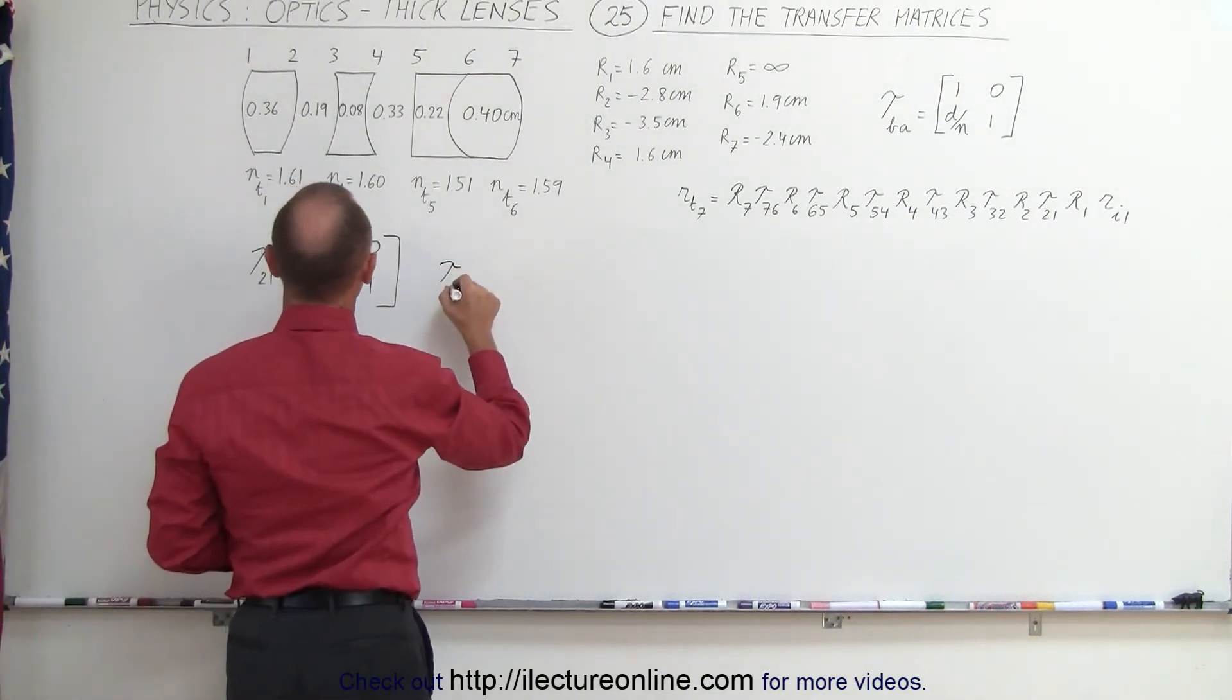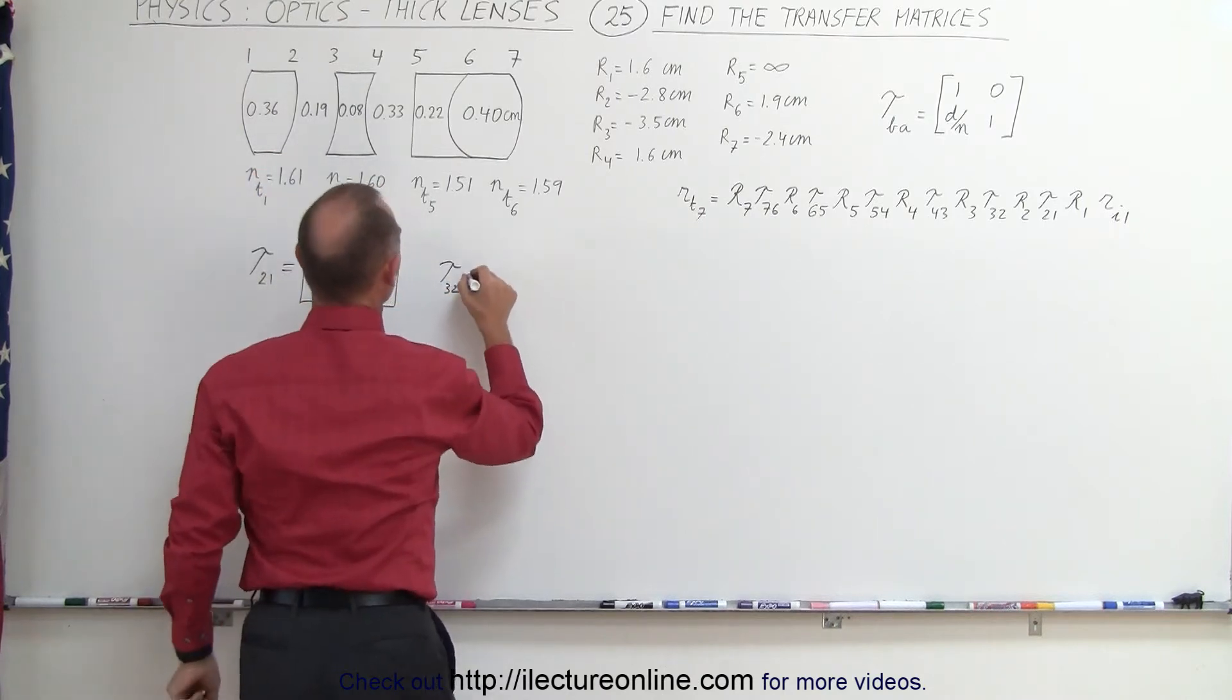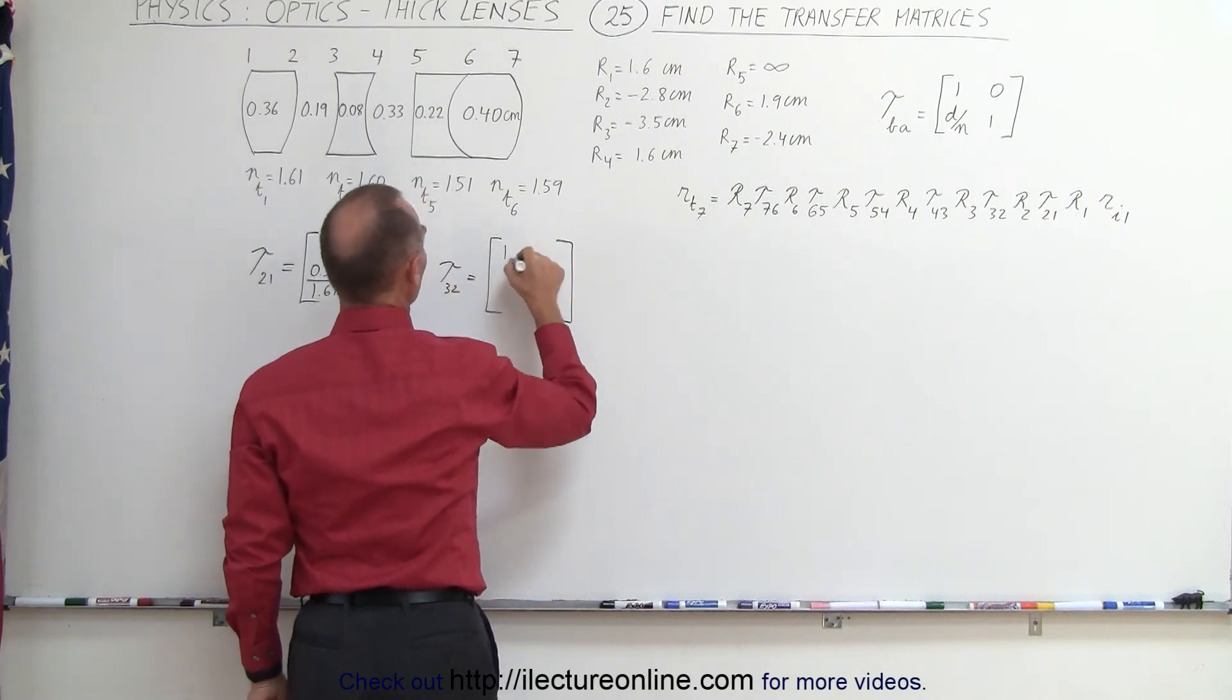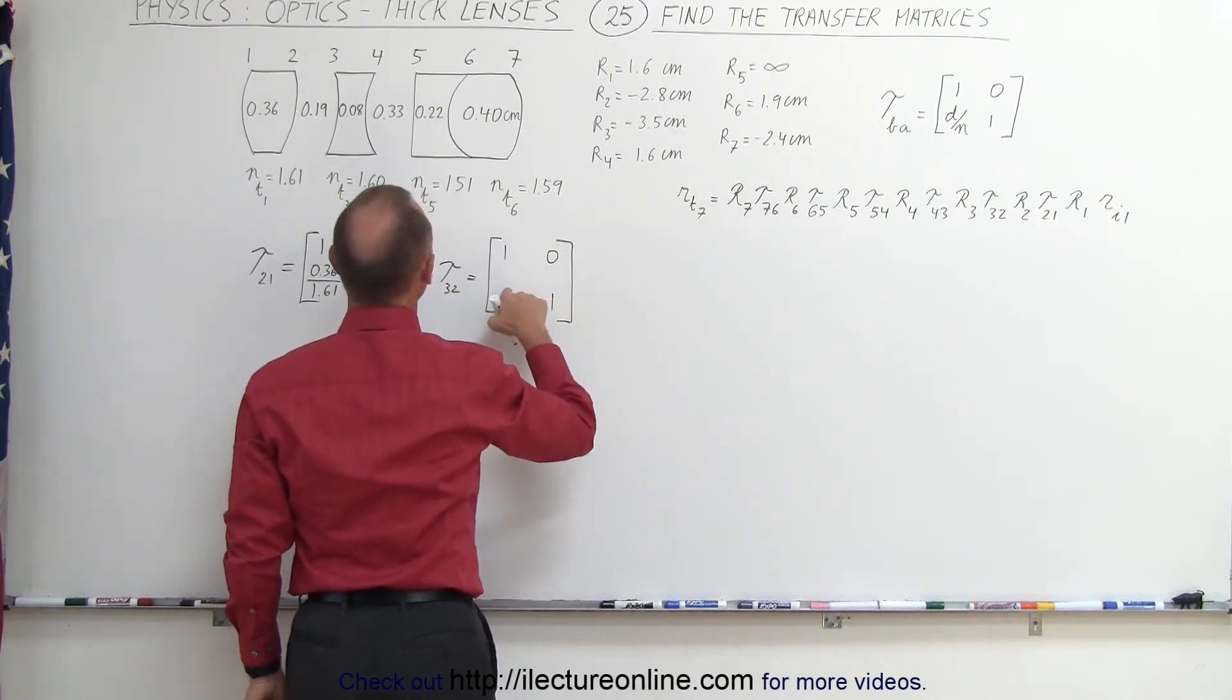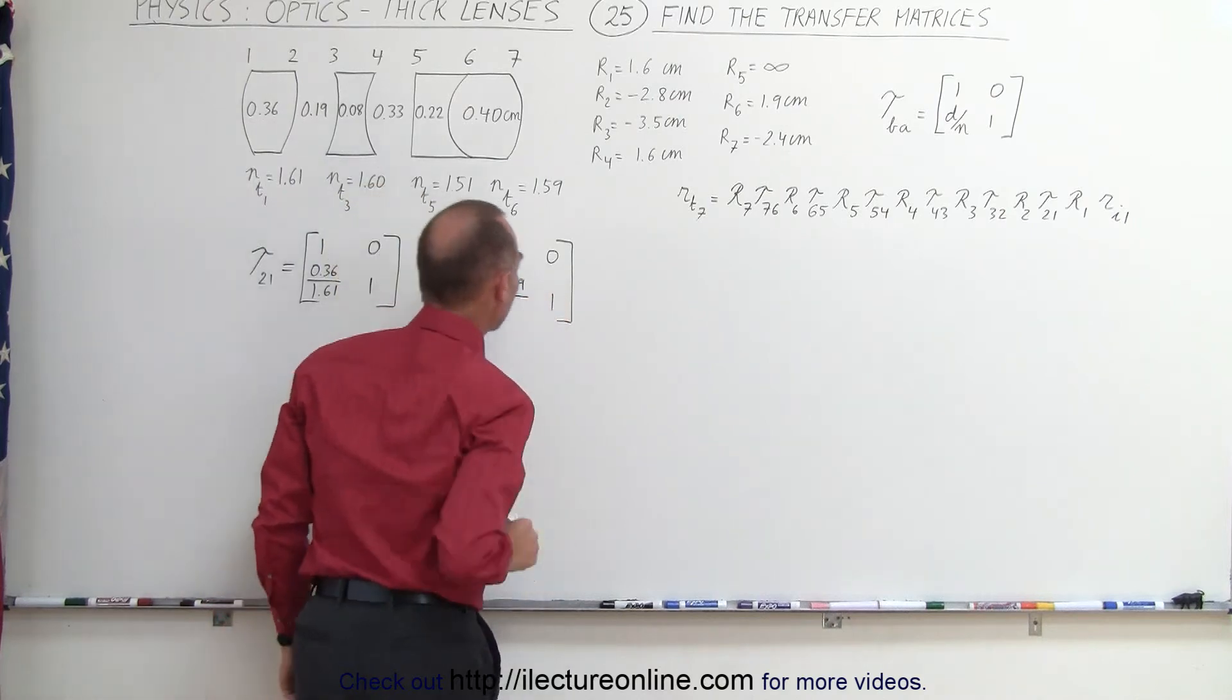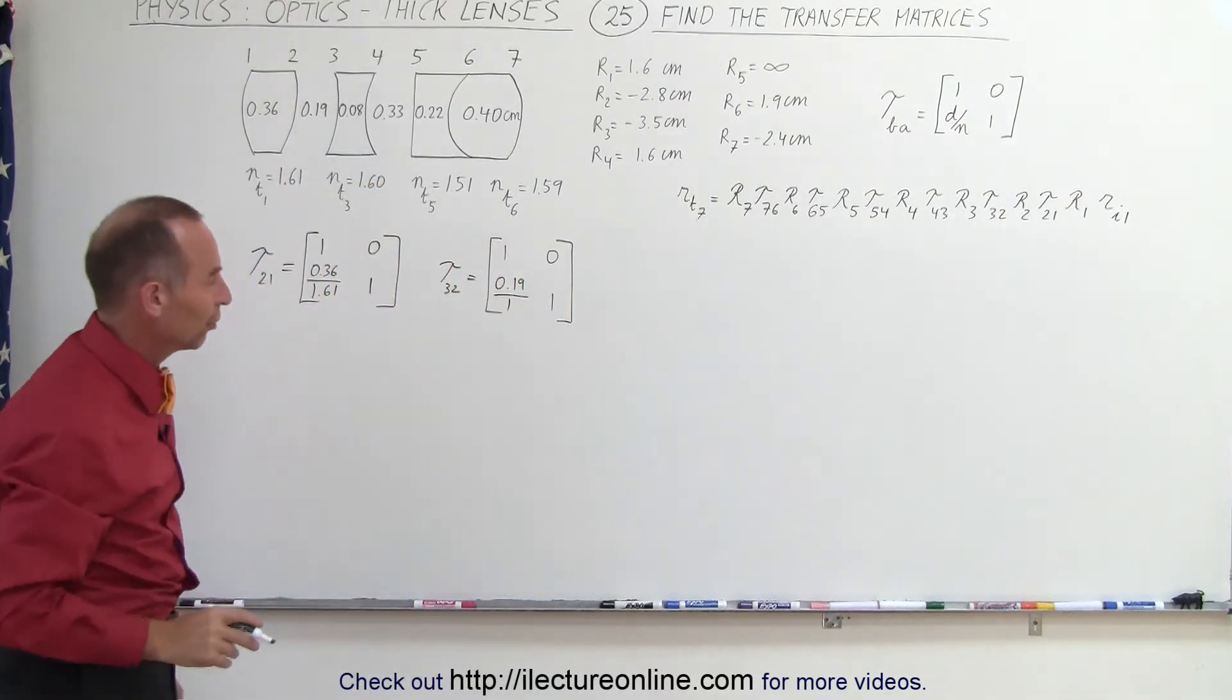The transfer matrix, going from 3 to 2, that would be through the air gap right here. That is equal to, again, they all have the elements 1, 0, 1 over here. And here would be the thickness, 0.19, divided by the index of refraction. That'll be 1, assuming it's air.